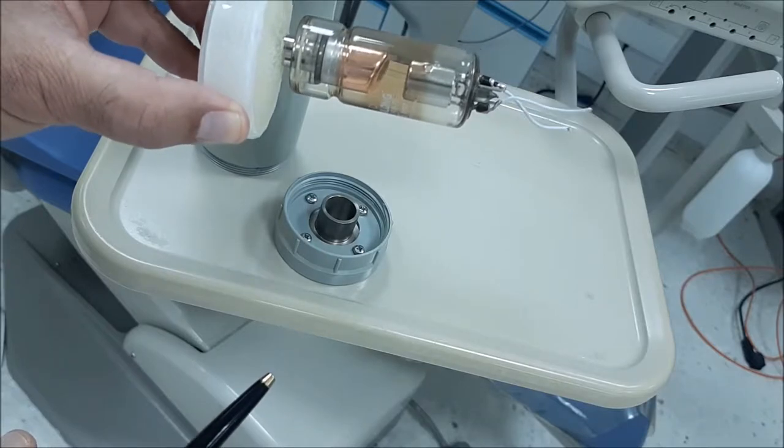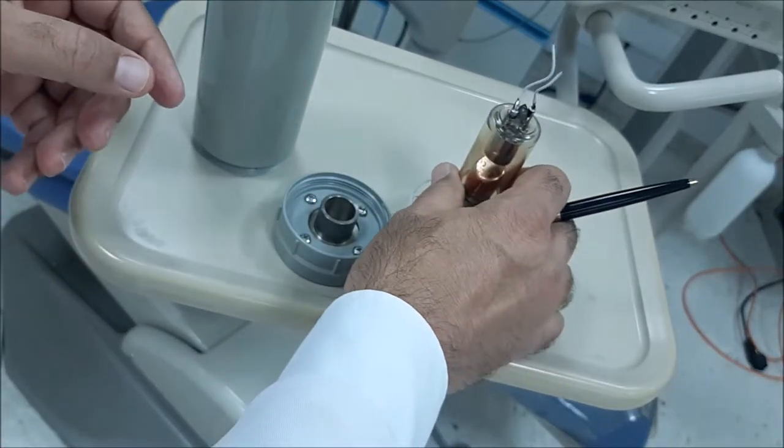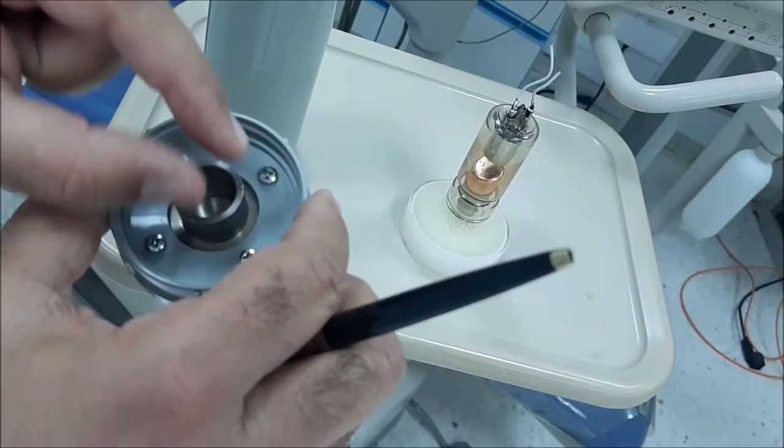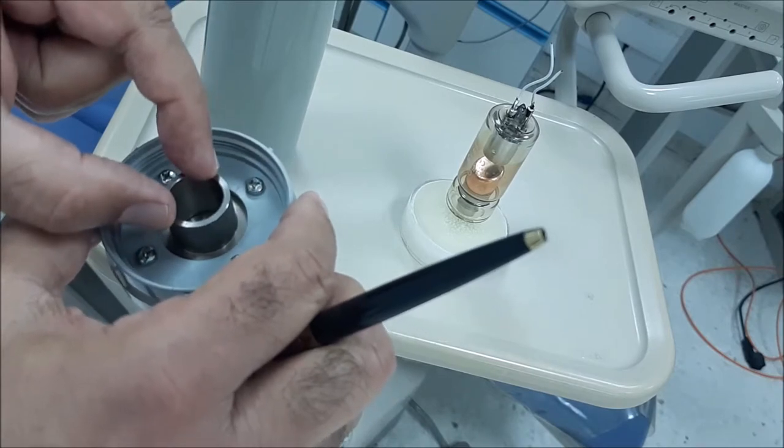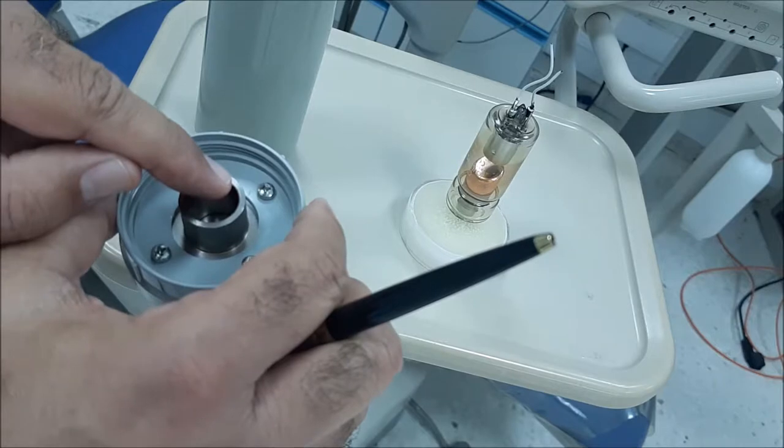In reality, we don't need this very big beam. We only need 6 to 7 cm diameter of a circular beam to reach the patient. This is equal to the size of the sensor that is placed behind the tooth.